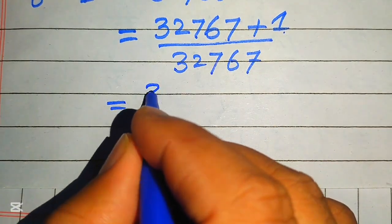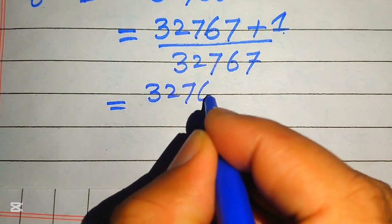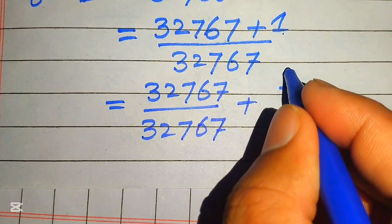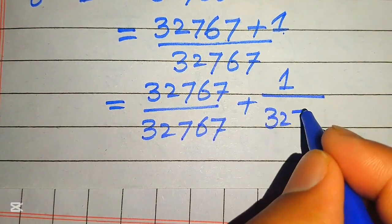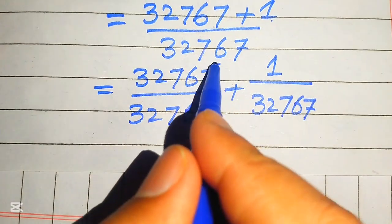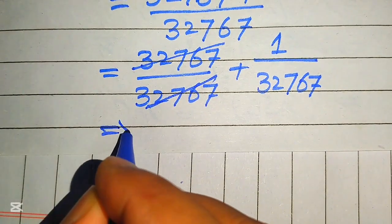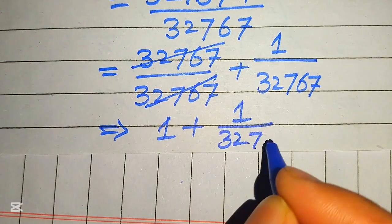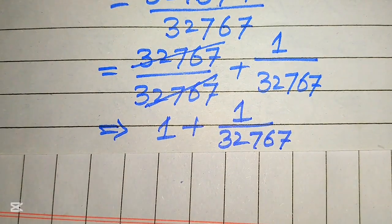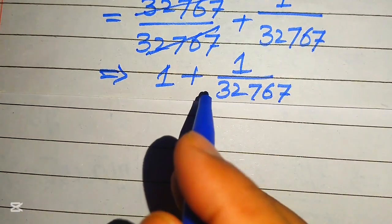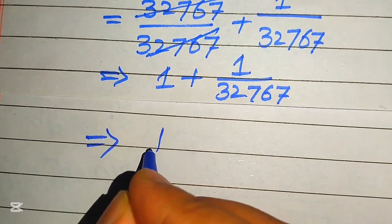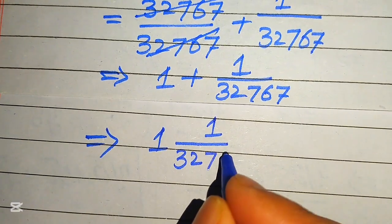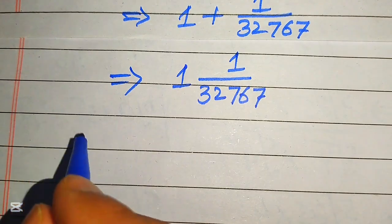To simplify the fraction 32,768 over 32,767, we break it as 32,767 over 32,767 plus 1 over 32,767. The first part cancels to 1, giving us 1 plus 1 over 32,767, which we write as the mixed number 1 and 1/32,767.